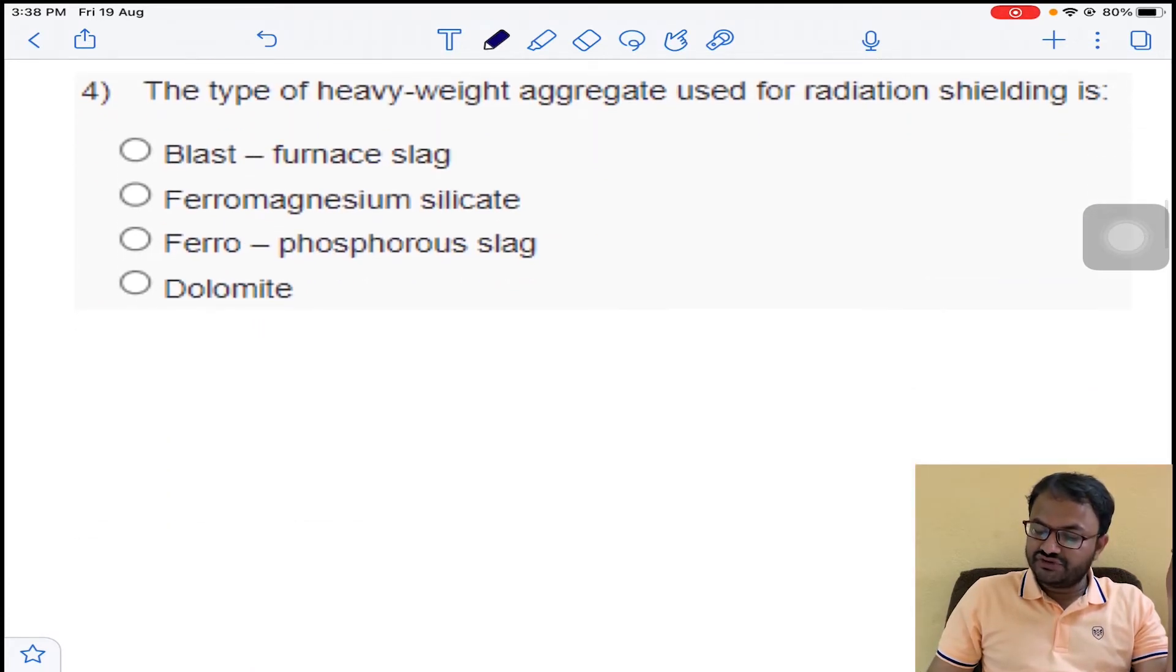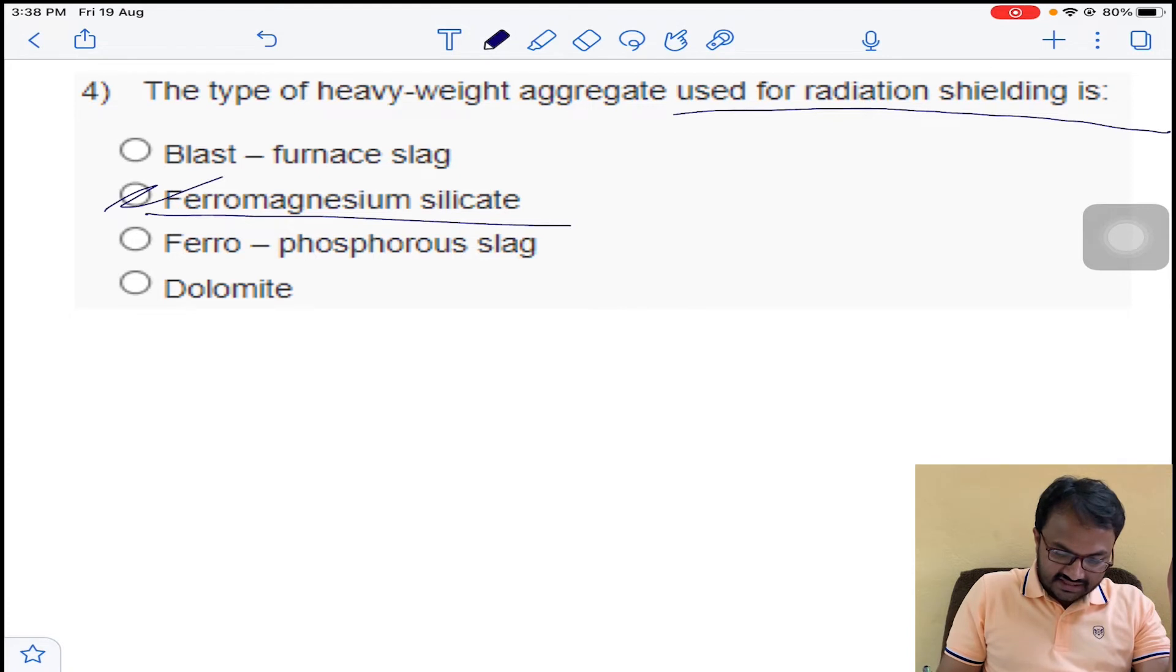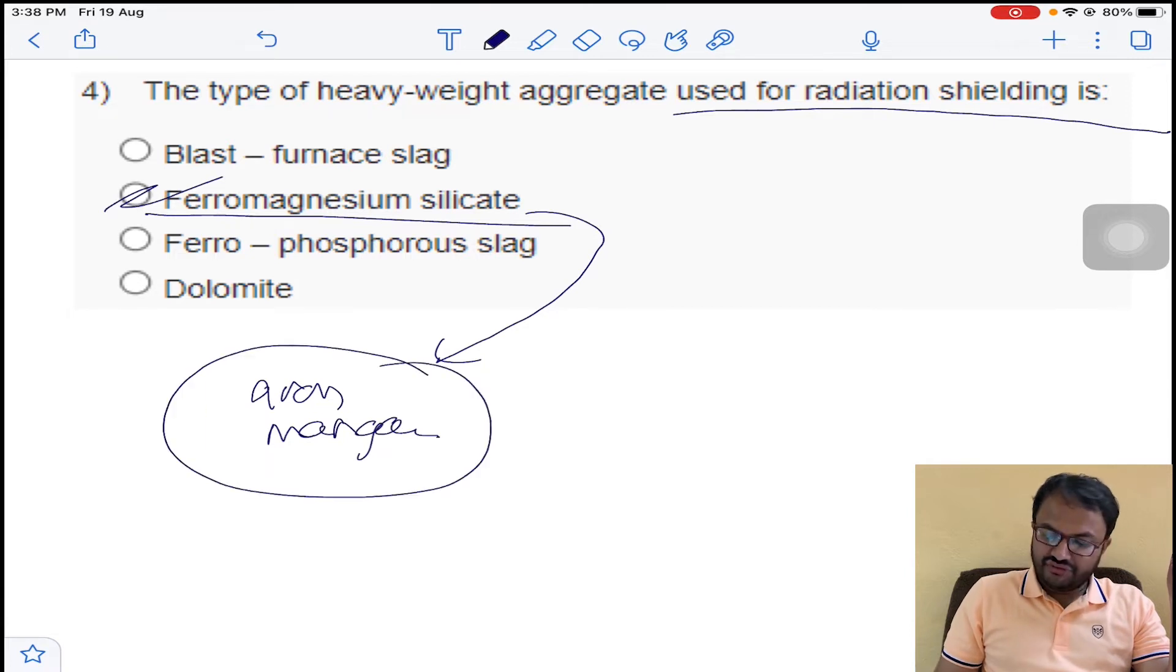Coming to the type of heavyweight aggregates used for radiation shielding, it is ferromagnesian silica. Iron and manganese are the main minerals present in the ferromagnesian silicate. By using this ferromagnesian silicate, it will be used in radiation shielding. Option B for question number 4.